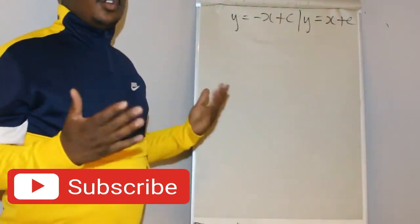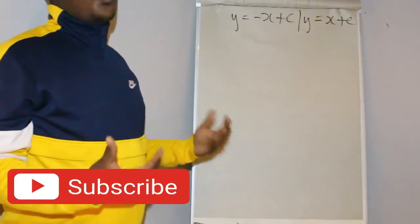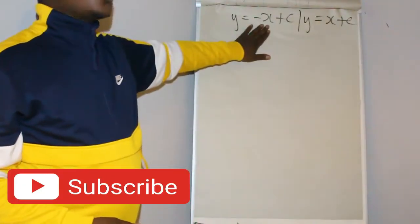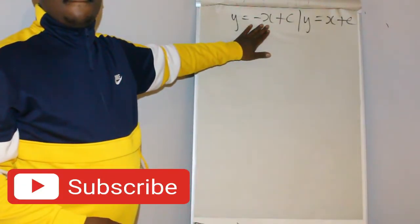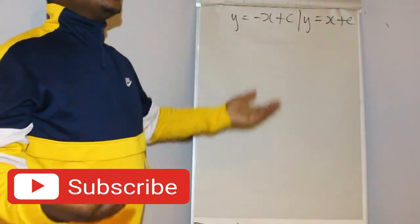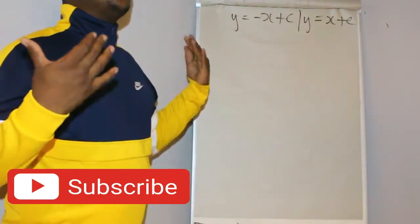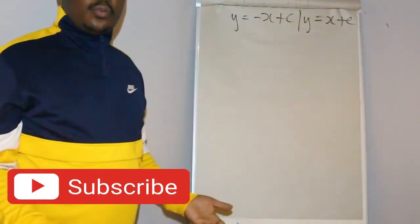Here in this case, you are told which one to use. They're saying use the one with the negative gradient, which is this one. On another day, you might be asked without being told which one to use. How do you determine which one to use?